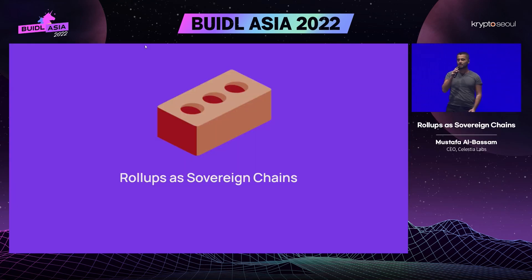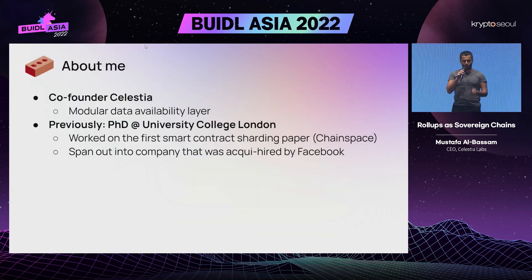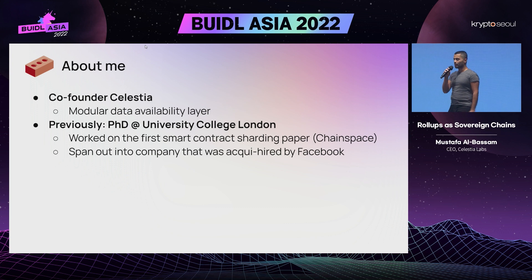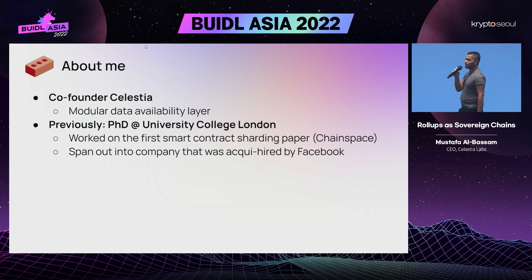Hello everyone. I'm going to talk about rollups as sovereign chains. Quick background about myself: I'm the co-founder of Celestia, which is a modular data availability layer. Before that, I did a PhD at UCL where I was focusing on blockchain scaling.